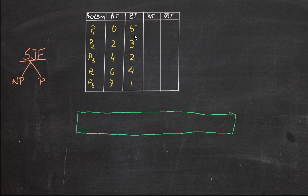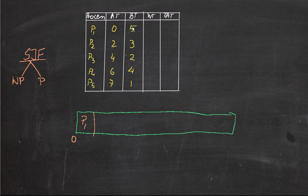The process arrival time and burst time are given. Let's draw the Gantt chart for this and then find out the waiting time and the average waiting time. The first process that comes is at the 0th second, so P1 comes first. P1 will be executed fully because it is non-preemptive — we do not preempt the process even if smaller processes arrive during its execution.